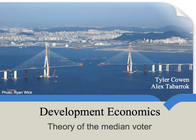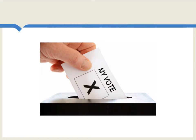Let's look at the theory of the median voter, one stylized account of democratic decision-making. In general, the evidence suggests that democracies give us better economic policy and definitely better human rights records. See the video on democratic evidence for more on this topic. But still, economists do not usually romanticize democracy — it's another decision-making process, and it actually has a lot of imperfections and flaws.